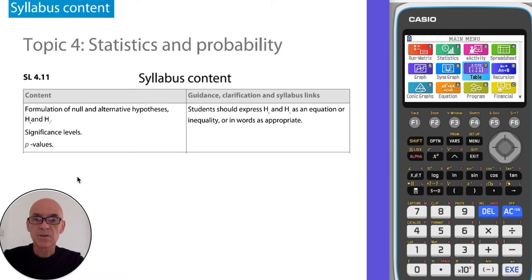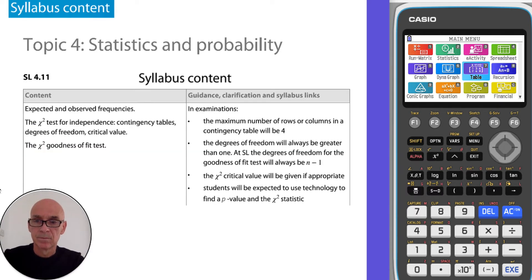You see in the syllabus it mentions the null and alternative hypotheses. It talks about significance levels and p-values and it mentions expected and observed frequencies, degrees of freedom and critical value, and all these things will be explained in the video.